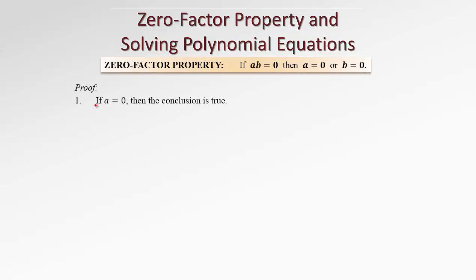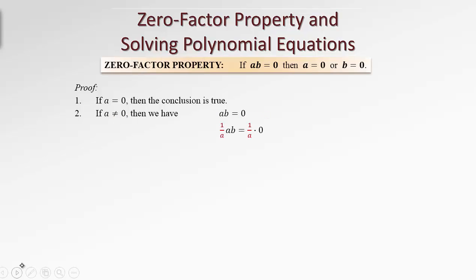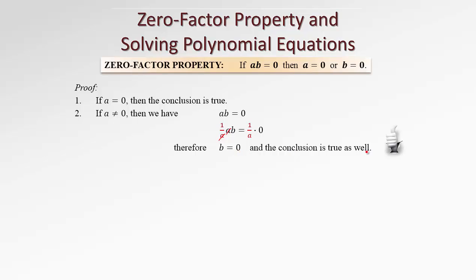How might the proof go? We consider two cases. What if a is zero? Well, if a is zero, then the conclusion is already true. So that's not a problem. What if a is not zero? Then, since the assumption is a times b equals zero and a is not zero, we can divide both sides by a. On the left-hand side, we cancel a, leaving just b, and on the right-hand side, zero divided by a is still zero. So we have our conclusion: b is zero, and the statement is proven.